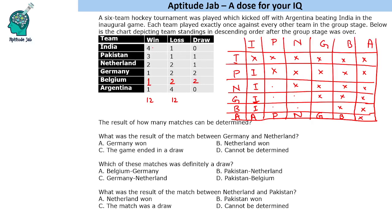We have now figured out the results of several matches and are left with six matches to resolve. Germany played two draw matches, Belgium played two draw matches. So Pakistan, Netherland, Germany, and Belgium are the four teams that played draw matches.